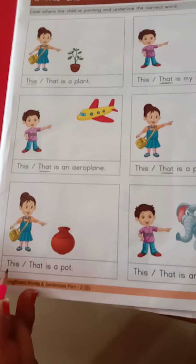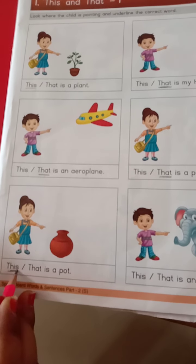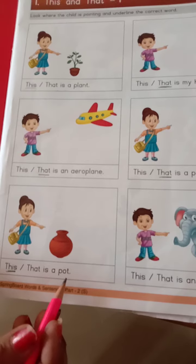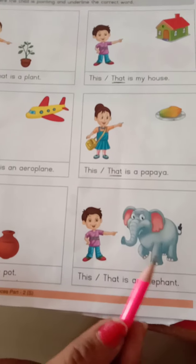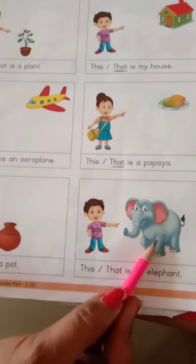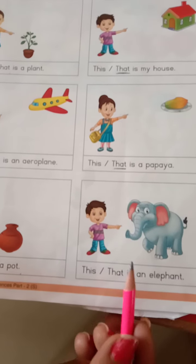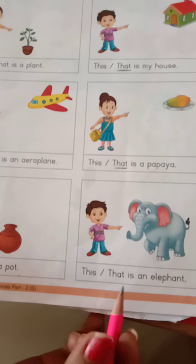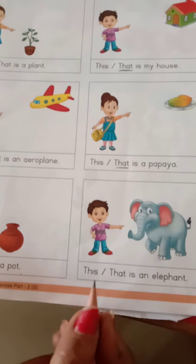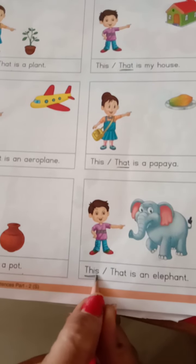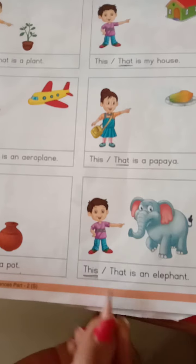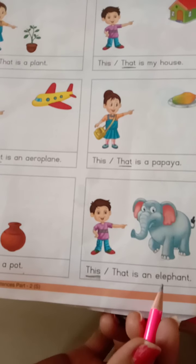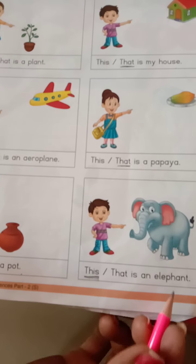This is a papaya. This is an elephant — so is he far away or not? No. Then we will use 'this.' T-H-I-S — this is an elephant.